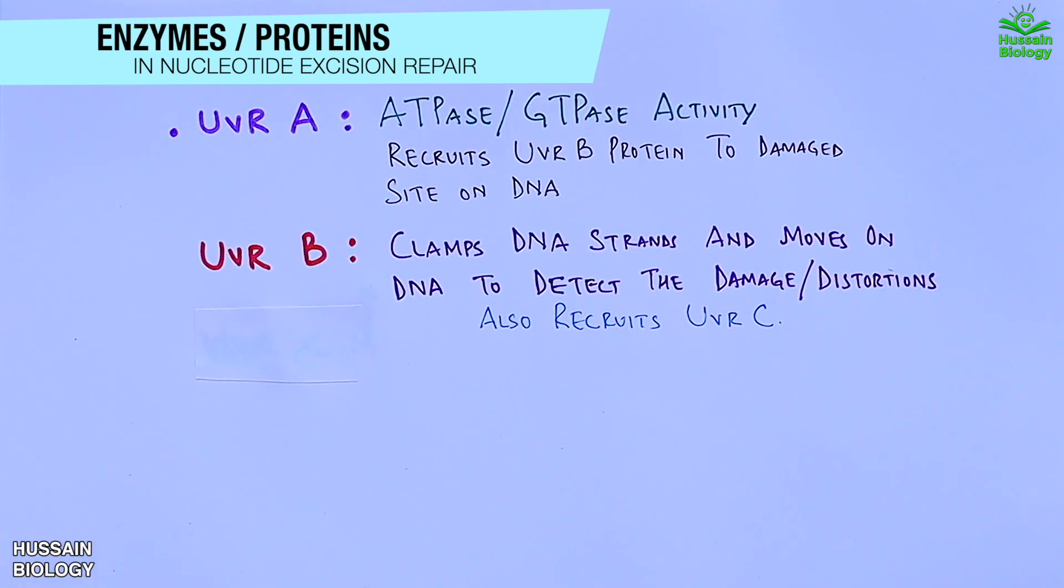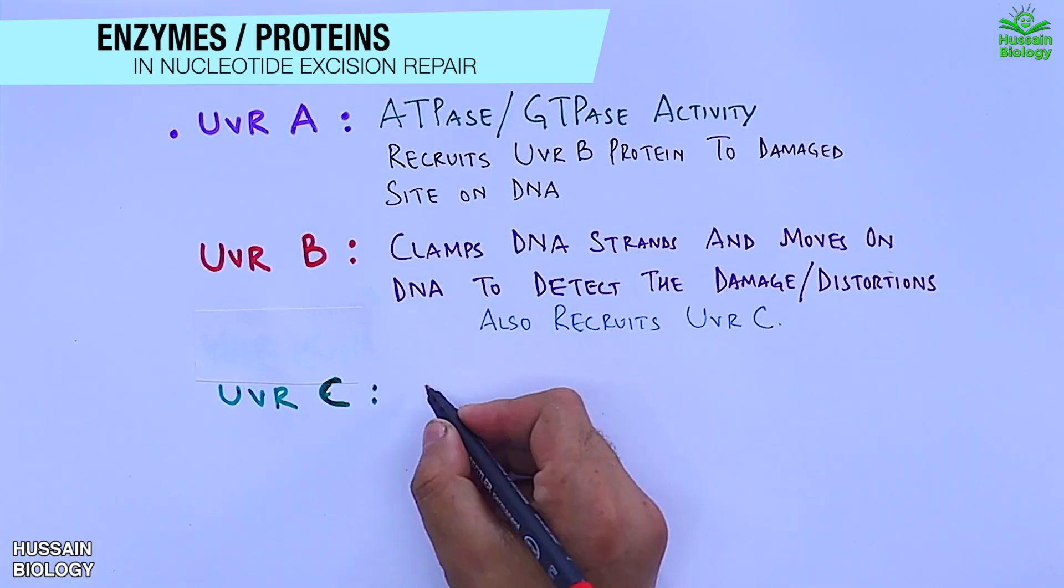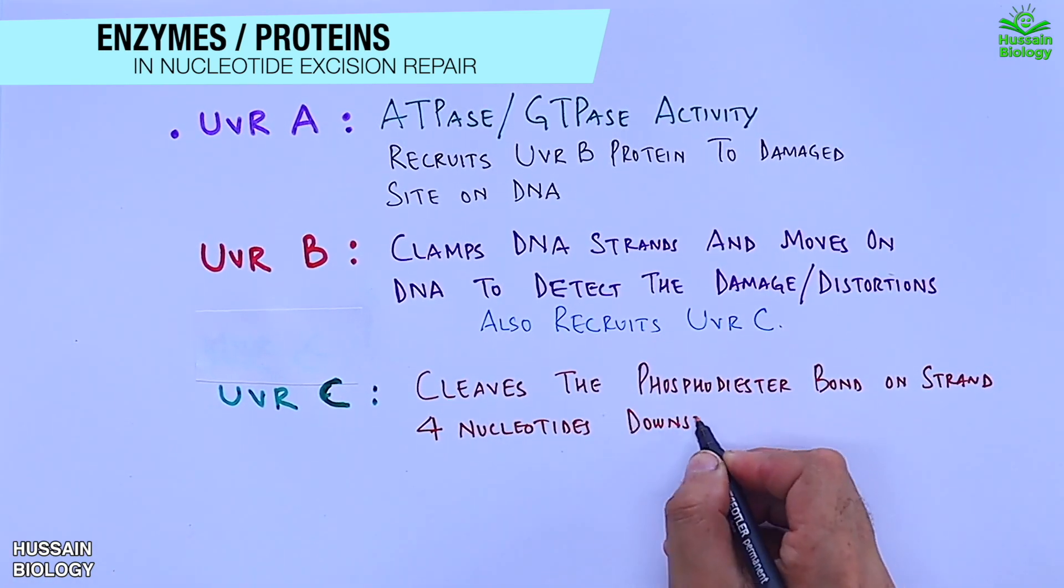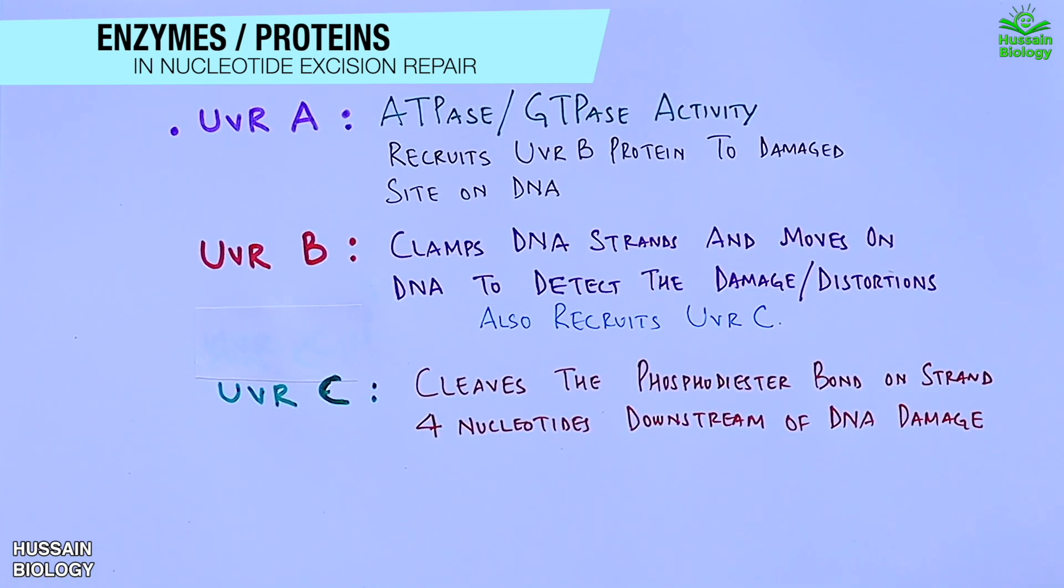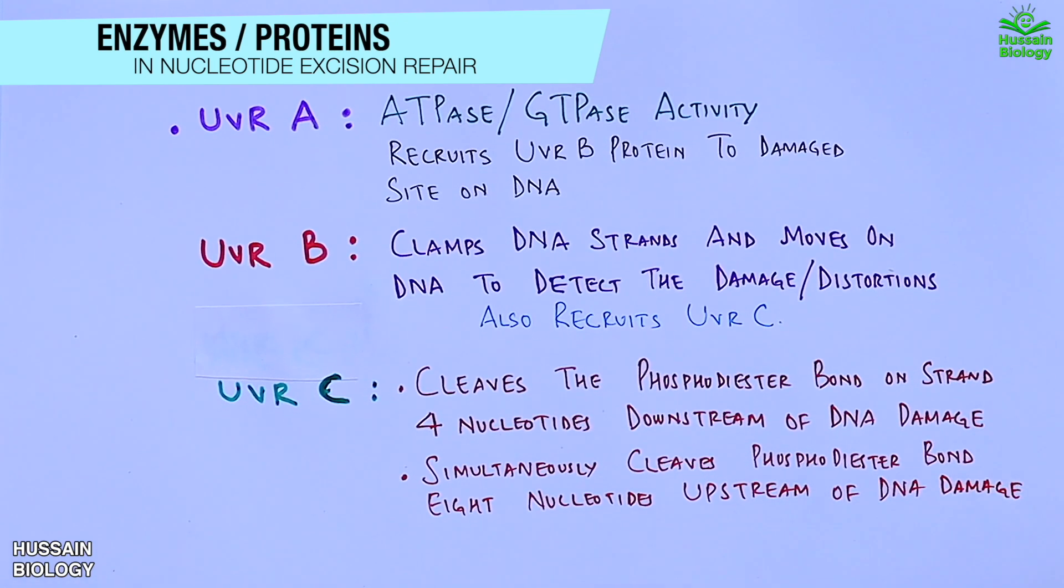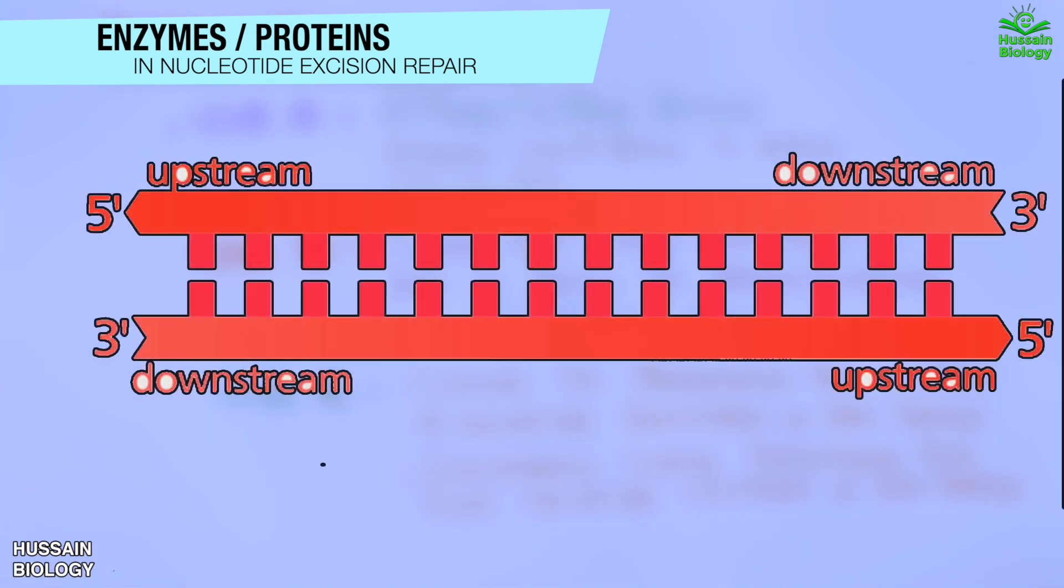Third protein is the UVR C. It shows dual incision activity. It cleaves the phosphodiester bond on strand 4 nucleotides downstream of DNA damage and simultaneously cleaves phosphodiester bond 8 nucleotides upstream of DNA damage. Upstream means towards the 5 prime end and downstream means towards the 3 prime end.